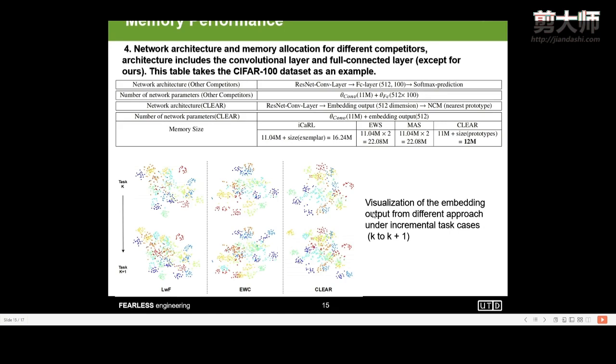Next, I will introduce the memory performance under the visualization of the embedding output from different task cases. First, I show the network architecture and memory allocation for different competitors. The architecture includes both the convolutional layer and the fully-connected layer. This table takes the CIFAR-100 data size as an example. Compared with approaches, for example, EWC and MAS, our approach could reach fewer memory size during the model training and testing.